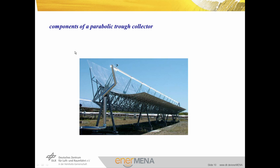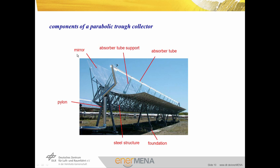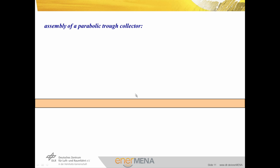The collector has the following components: foundation, pylon, steel structure, mirrors, absorber tubes, absorber tube supports, a drive, a tracking sensor, and a flexible tube. This flexible tube is necessary because when the collector is moving, the absorber tube part also moves but the connection piping system is still fixed. So between those two points we need a flexible tube. Before explaining the components in more detail, I would like to assemble a parabolic trough collector together with you.